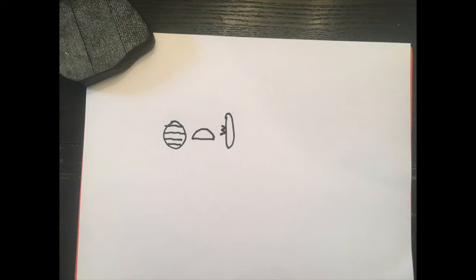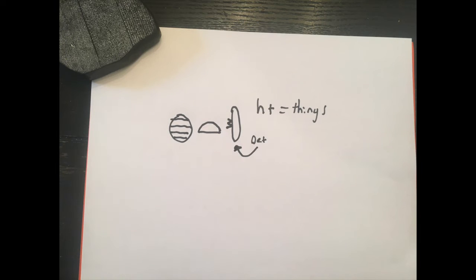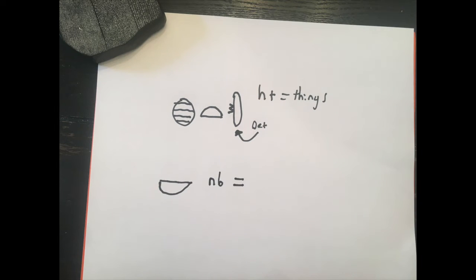The first one starts off with the word khut, which we've talked about before — it is the word for 'thing.' We have the placenta, the loaf, and then the determinative for non-representative objects: a sort of oval with a w, which is a papyrus scroll. This determinative is used for things that could be anything, like 'things.'